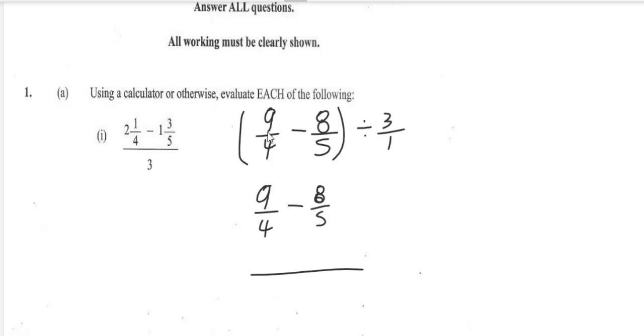Now 4 into 20 goes 5 times, 5 times 9 is 45. Bring back down the sign. 5 into 20 goes 4 times, 4 times 8 is 32.